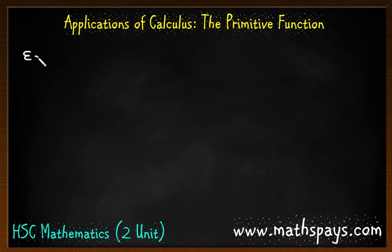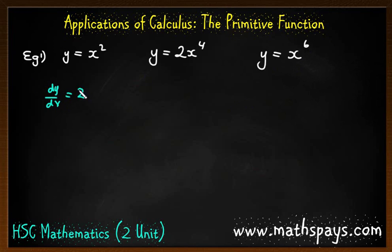Okay, so first of all, before I really begin, I'm just going to give you a couple of functions. Let's say y equals x squared, let's say y equals 2x to the power of 4, and then let's say y equals x to the power of 6. I want you quickly to find the derivative of those three functions. So hopefully what you've said is for the first one, dy/dx is equal to 2x, dy/dx the second one is equal to 8x to the power of 3, and then for the last one, dy/dx equals 6x to the power of 5.